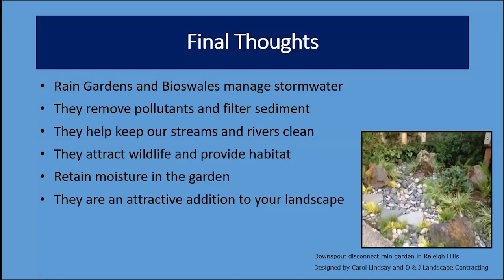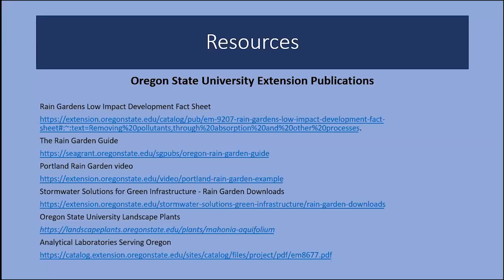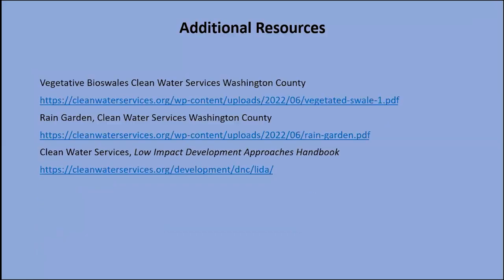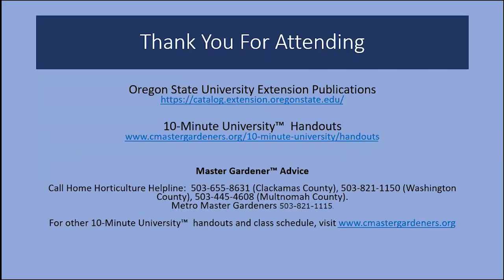This is a summary of the importance of rain gardens: they manage stormwater, filter pollutants, filter sediment, keep our streams and rivers clean, attract wildlife and provide habitat, retain important moisture in your garden, and are an attractive addition to your landscape. The Rain Garden Guide from Oregon State University Extension has many plant suggestions for all parts of Oregon. These 10-minute university handouts have been reviewed by OSU faculty and contain pertinent information for gardeners. Thanks so much for attending — now we have time for some questions.